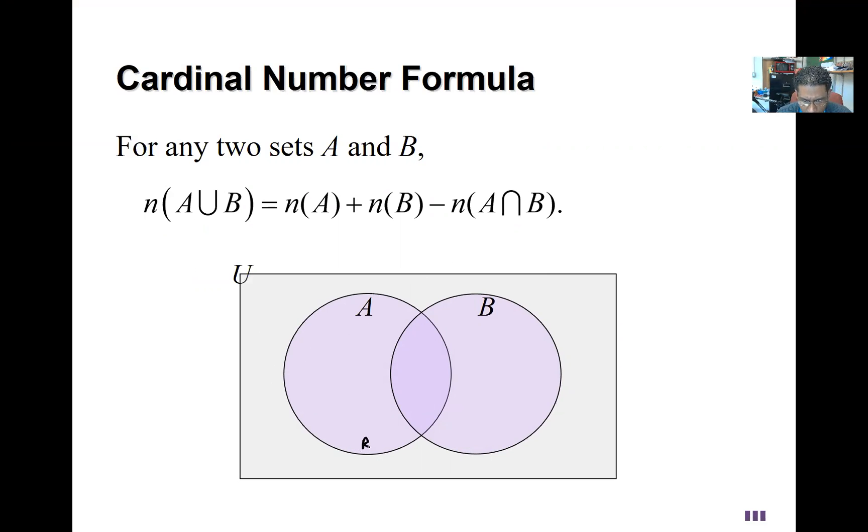Let's label the regions like we've been doing, try to understand why this formula would be true. The number of elements in A are represented by region one and region two. The number of elements in B are represented by region two and region three.